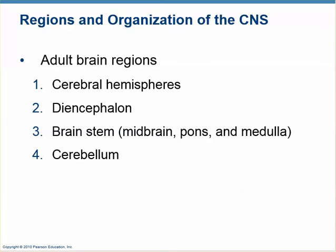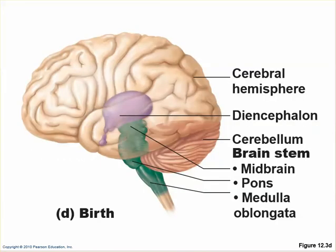In the adult brain, which is what we're going to be talking about first, there are various regions. There's the cerebral hemispheres — those are the things that you first note when you look at a brain; it's the wrinkly bits. There's the diencephalon, which is kind of the center — the deep primitive part of the brain. There's the brain stem, which consists of the midbrain, pons, and medulla; a lot of the autonomic stuff happens there. And the cerebellum, which is kind of the cauliflower at the back of the brain, is kind of quality control for the brain.